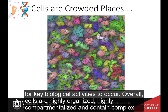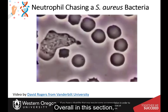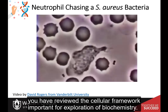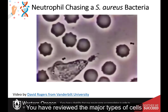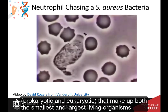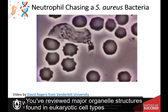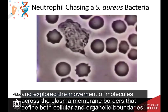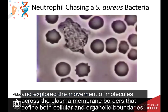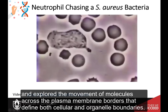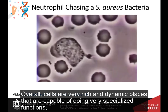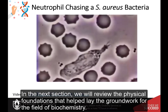Overall, cells are highly organized, highly compartmentalized, and contain complex machinery for the transport of molecules. In this section, you have reviewed the cellular framework important for our exploration of biochemistry. You have reviewed the major types of cells — prokaryotic and eukaryotic — that make up both the smallest and largest living organisms. You have reviewed major organelle structures found in eukaryotic cell types, and explored the movement of molecules across the plasma membrane borders that define both cellular and organelle boundaries. Overall, cells are very rich, dynamic places that are capable of doing very specialized functions, such as this white blood cell chasing a bacteria. In the next section, we will review the physical foundations that help lay the groundwork for the field of biochemistry.